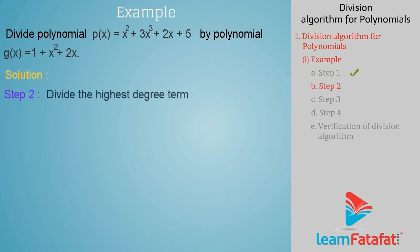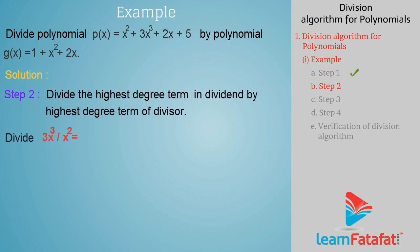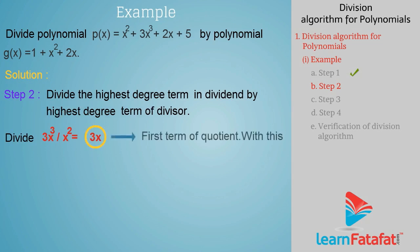Step 2: Divide the highest degree term in the dividend by the highest degree term of the divisor. That is, divide 3x cubed by x squared, which gives 3x. This is the first term of the quotient. With this, carry out the division process.